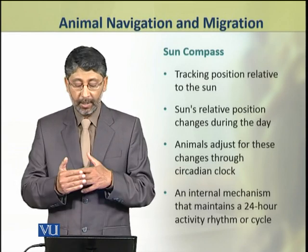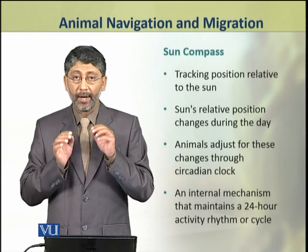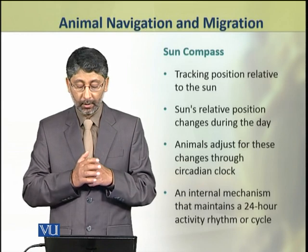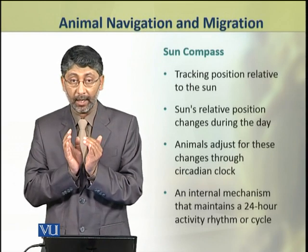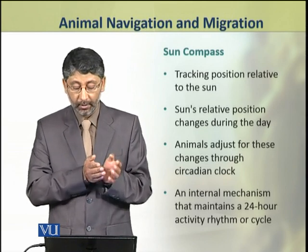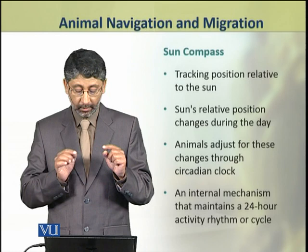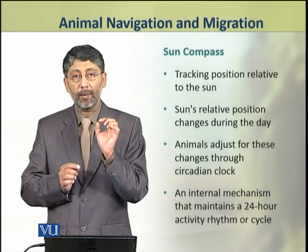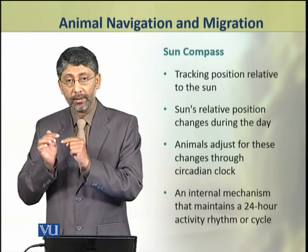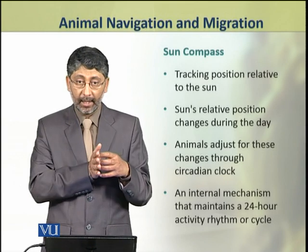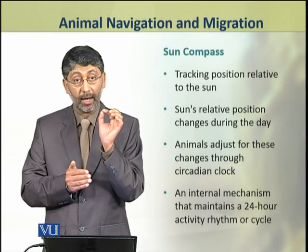First of all, the sun compass is used to track the position of an animal relative to the position of the sun in the sky. The sun's relative position changes during the day. Animals adjust for these changes through a circadian clock, which is an internal mechanism that maintains a 24-hour rhythmic cycle.